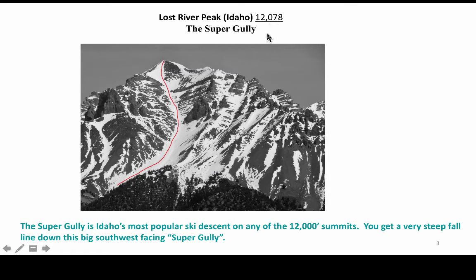It's about 12,000 feet, and it has a ski run that you can see here that goes down through this gully, which is of course the super gully. This line here is very, very close to what is called the fall line, or the line of steepest descent, and I think you can see that that's the case right here.